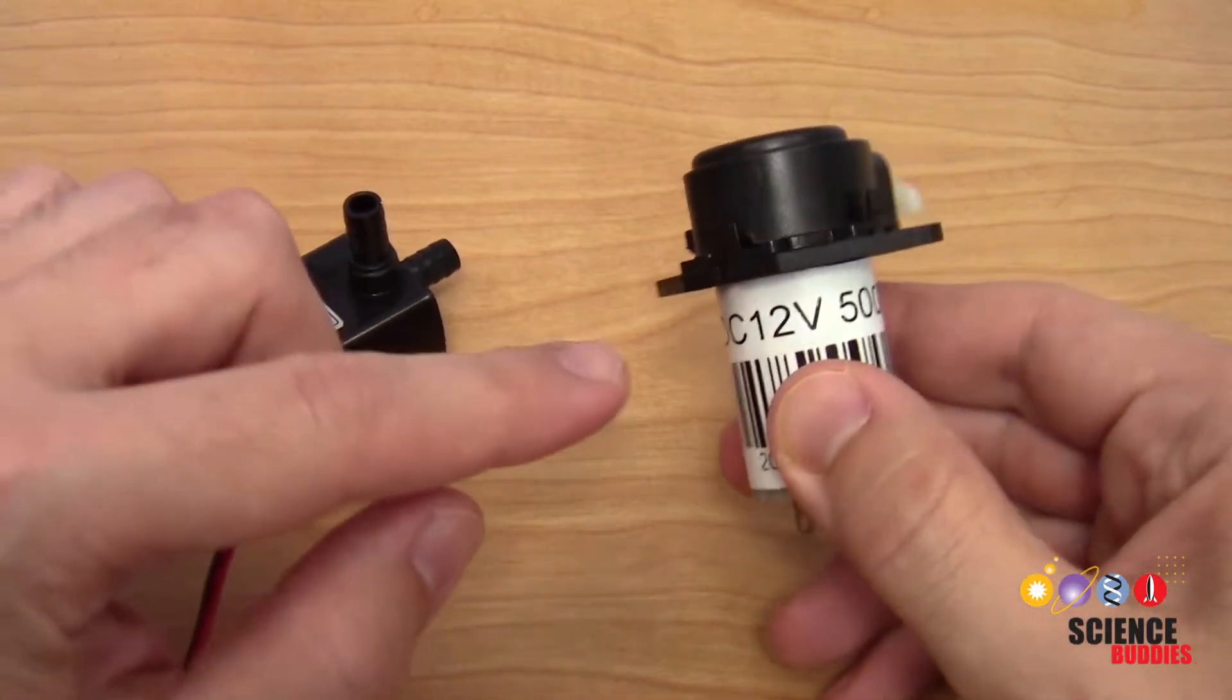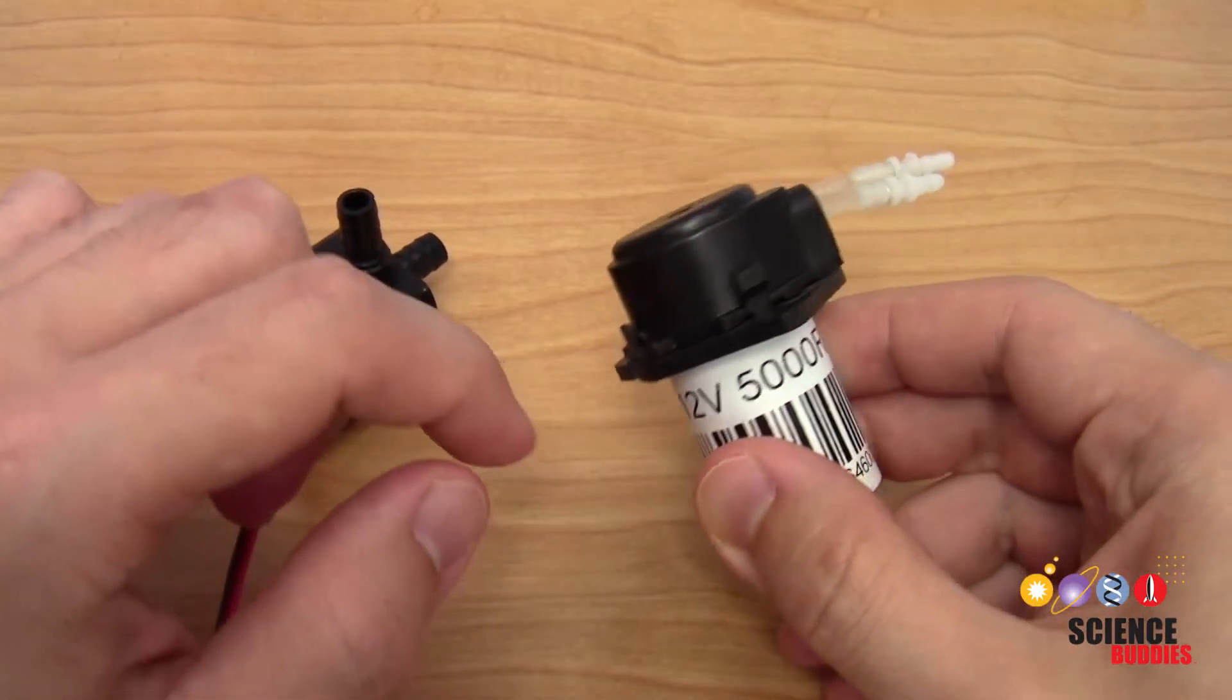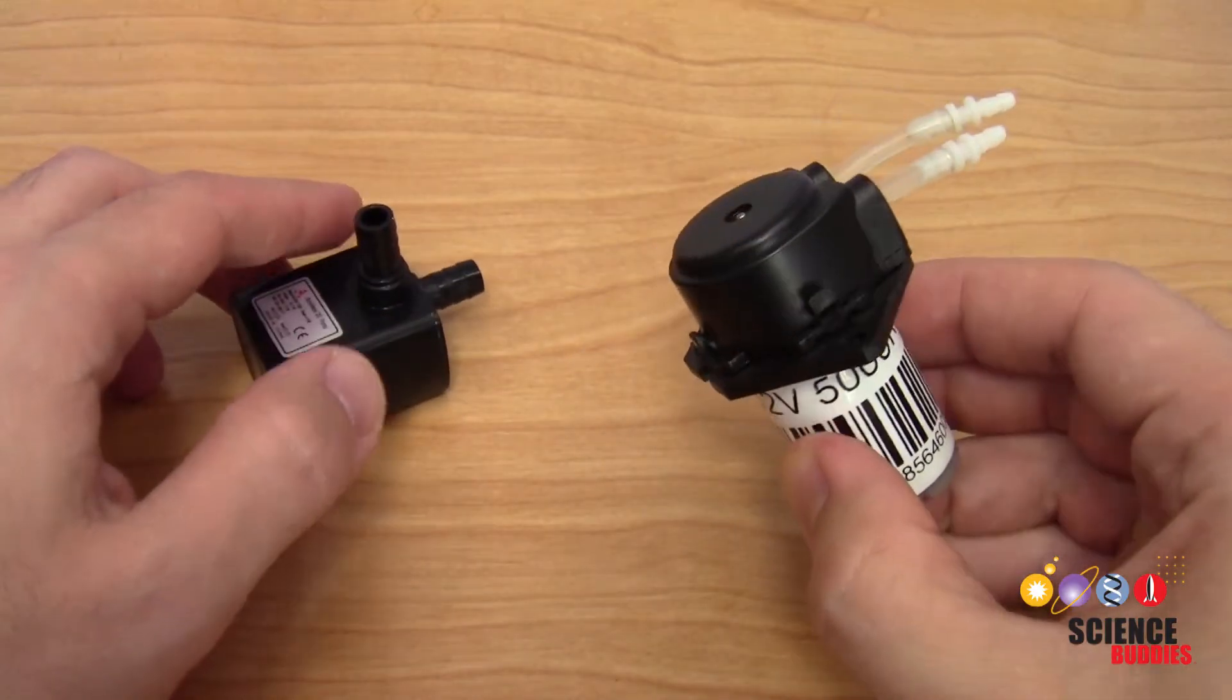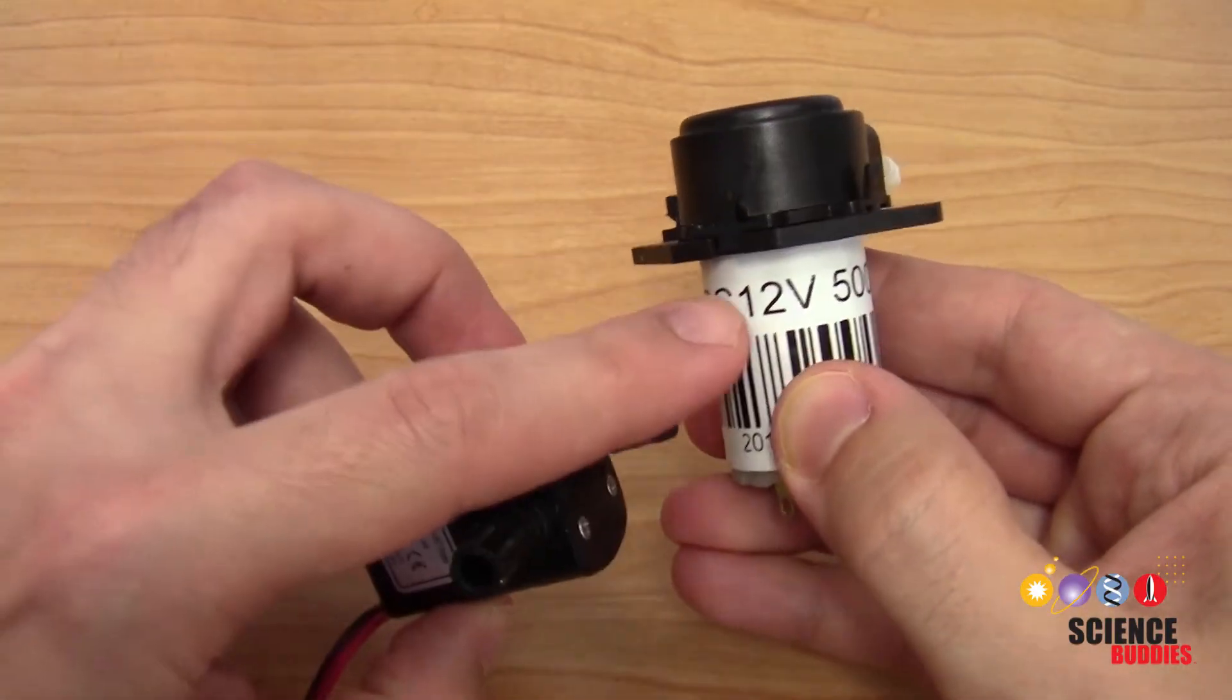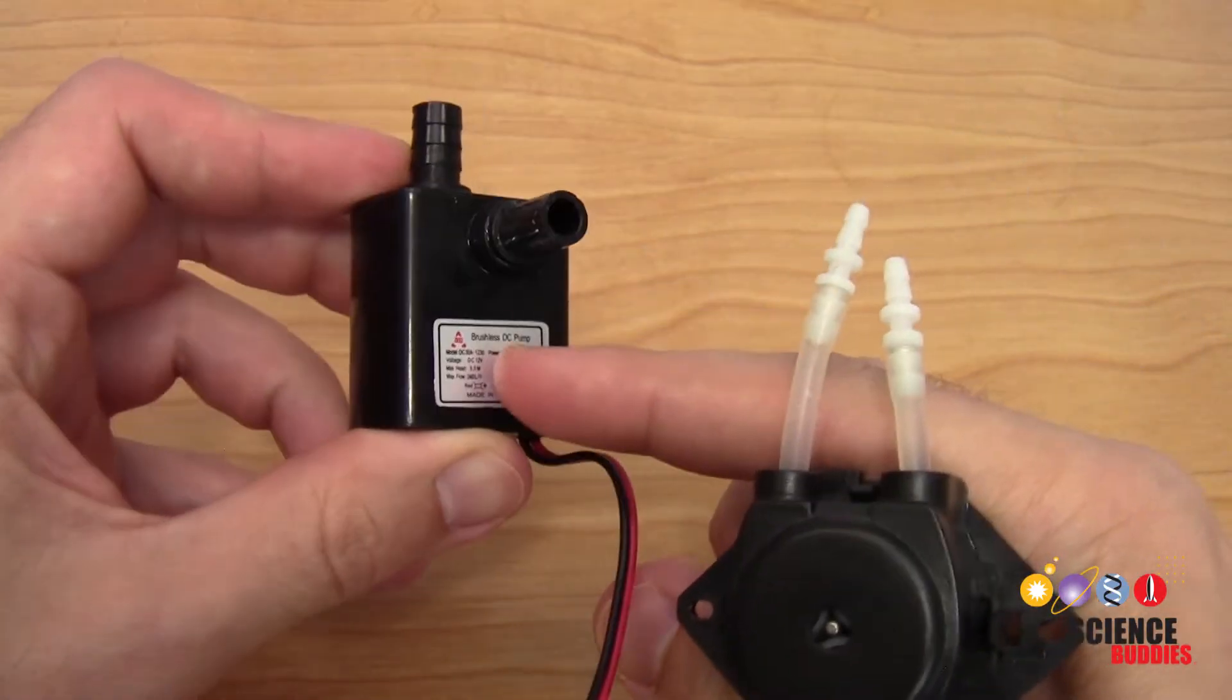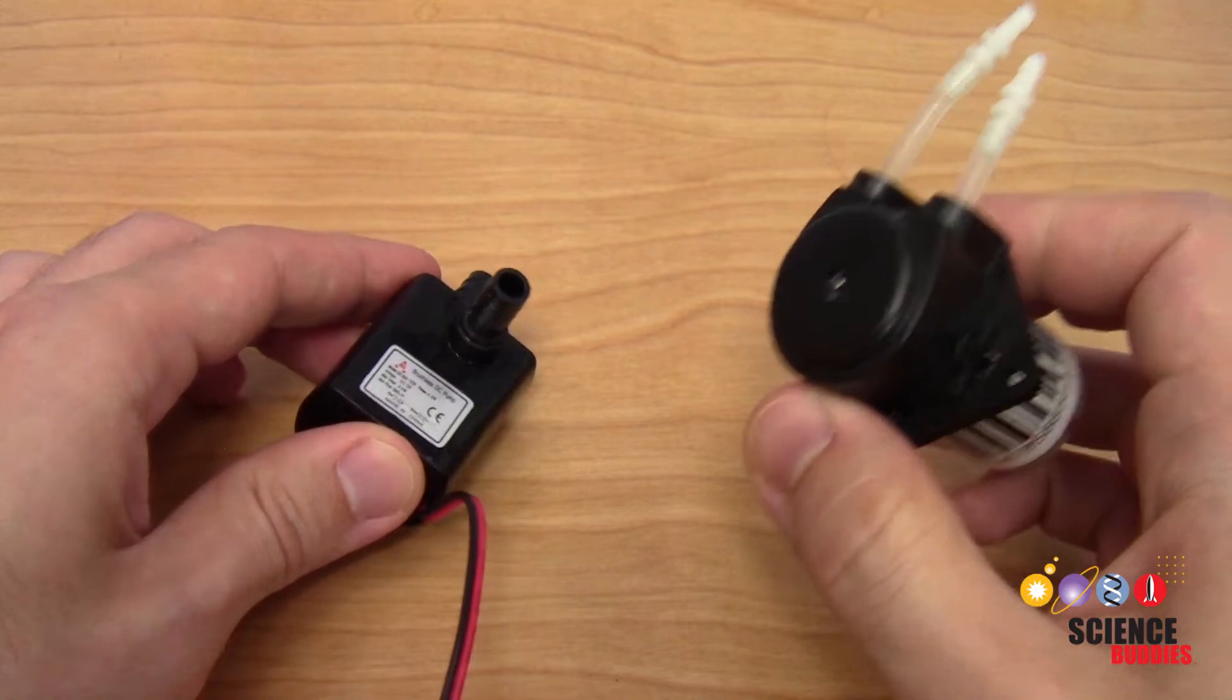When you buy a pump, you will need to know the voltage required to power the pump, and the diameter of tubing that will fit onto the pump's nozzles. For example, we can see here, this pump operates at 12 volts. This one's also 12 volts, so the text might be too small for you to see on the label there.